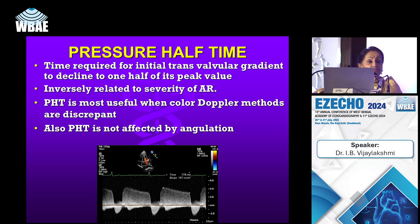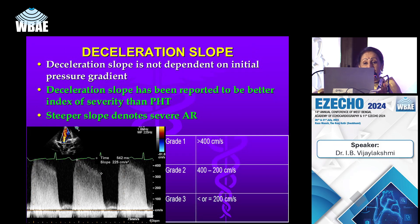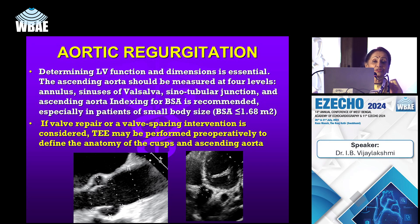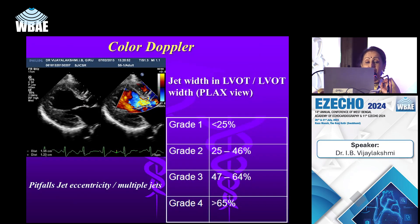Aortic insufficiency precludes accurate measurement of pressure half time. On echo there are two jets: the candle flame appearance of mitral stenosis and the AR jet. When two jets are present, we must be very careful — if the cursor is placed on the AR jet instead of the MS jet, we will overestimate. The cursor placement on the correct jet is essential.